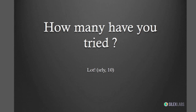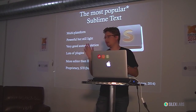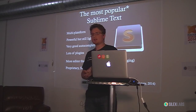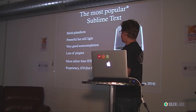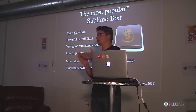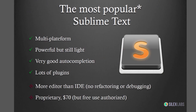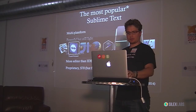First, I'd like to start with the most popular. I did a quick survey on Twitter, and about 60% of you are using Sublime Text. Sublime Text is an editor with a very good Haxe plugin, developed mostly by Clemos, which you surely know. That's a very good editor because it's multiplatform — it works seamlessly on all three major operating systems. It's very powerful, with good auto-completion and a lot of cool tricks you can do.